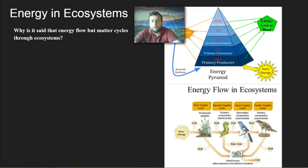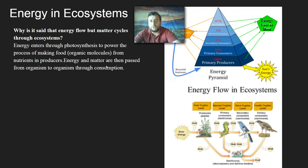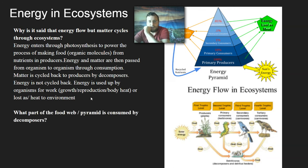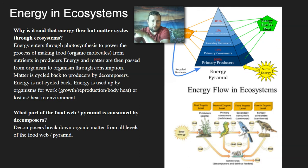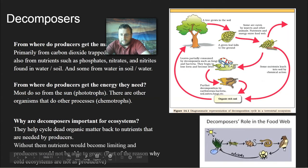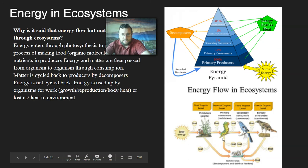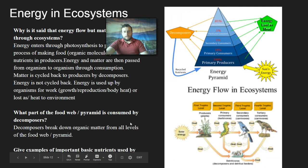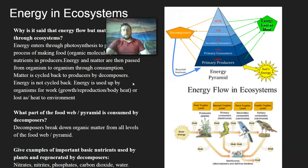Energy flows through ecosystems because decomposers do not give energy back to producers — it's used up. But matter is cycled back through the role of decomposers. All organisms at all levels are broken down by decomposers. Every organism gets broken down into smaller chunks, and the chunks that get used by plants are nitrates, nitrites, phosphates, carbon dioxide, and water — those are the essential nutrients that plants will use.